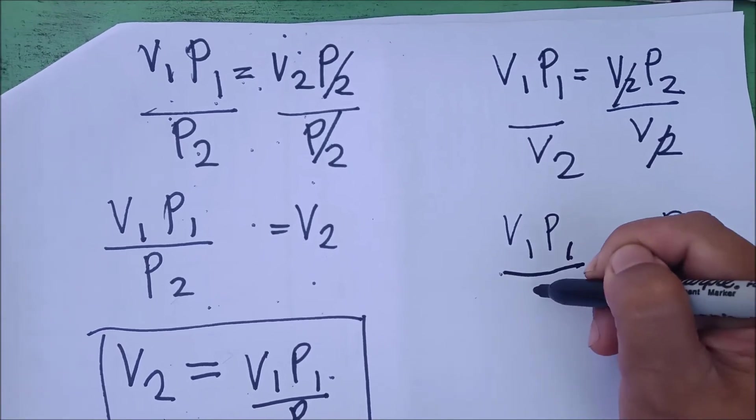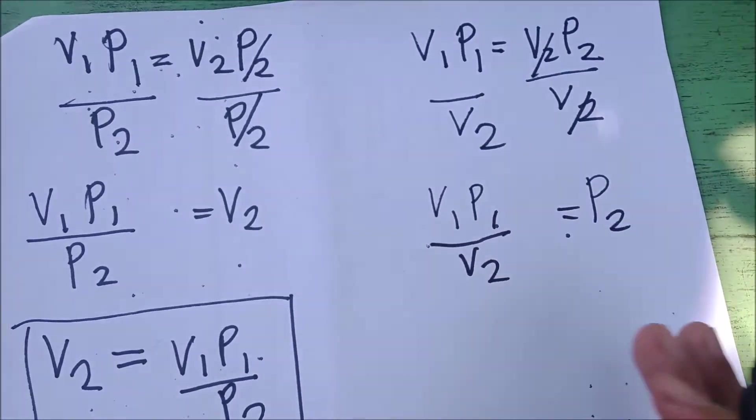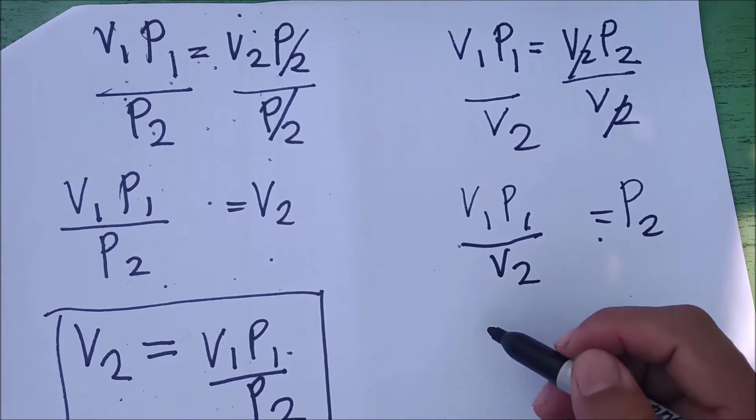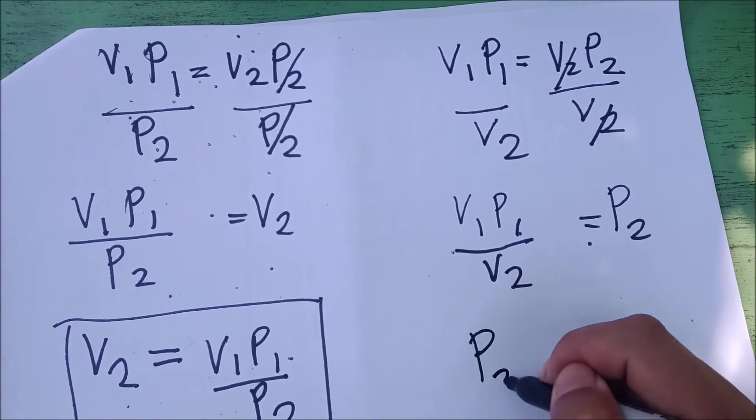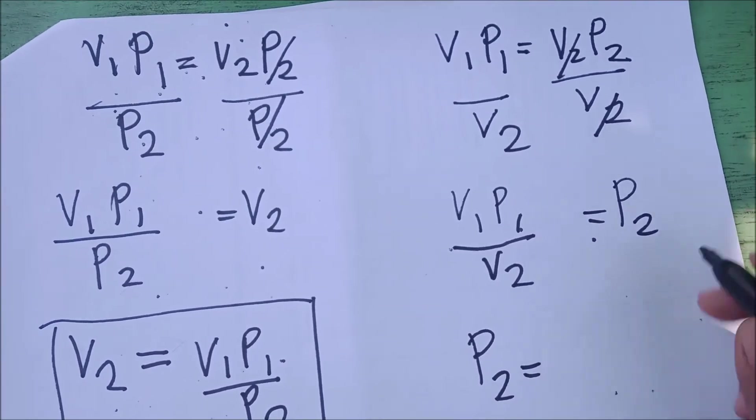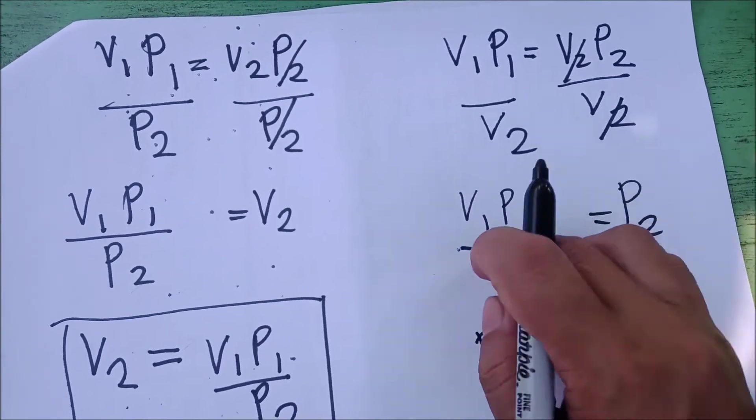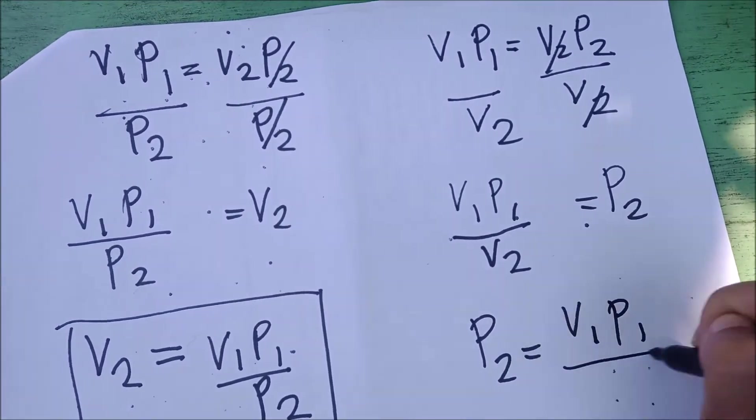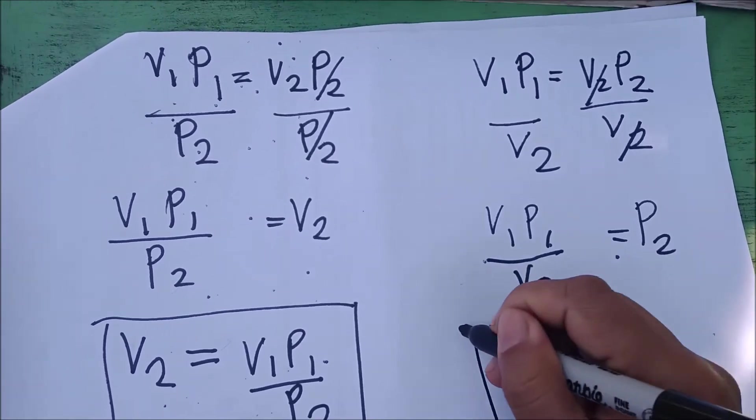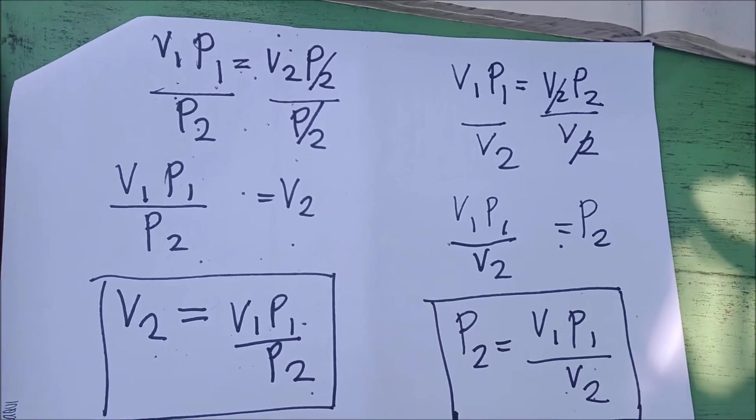Our formula for P2 will be V1, P1 over V2. Or, we can also reverse it. Just transfer P2 on the left side. And then, completely transfer this one on the right side. V1, P1 over V2. There you have it.